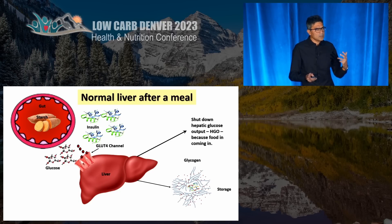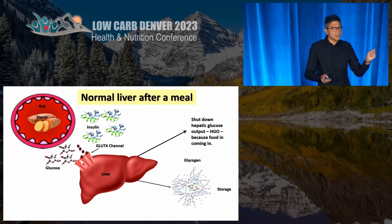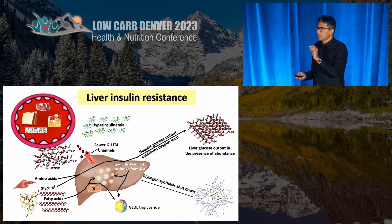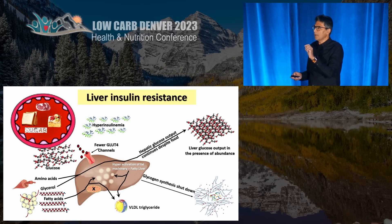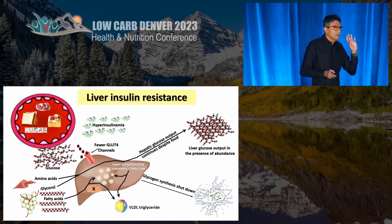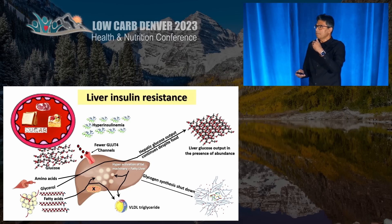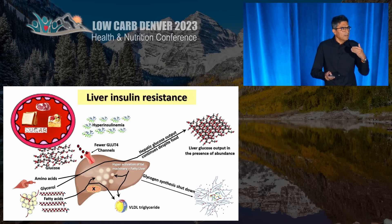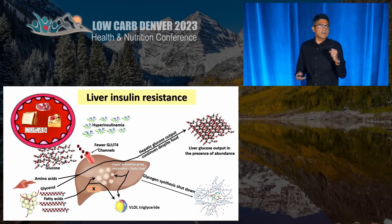When you eat a meal, glucose is coming in. The liver can use what it needs and store it as glycogen, and hepatic glucose output should get shut down. However, in the setting of insulin resistance, insulin cannot recruit the GLUT4 channels. Amino acids from fat breakdown and glycerol from lipolysis continue to be taken up by the liver, and in the midst of plenty of food, the liver puts out glucose when it shouldn't. It also jacks up the fat manufacturing machinery to become fatty, and spews out triglyceride-rich lipoproteins.